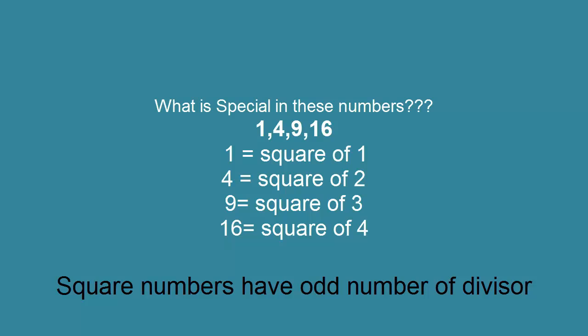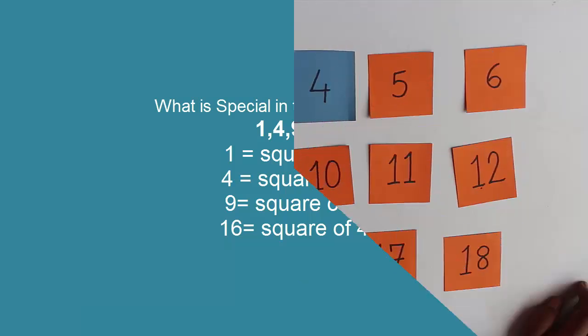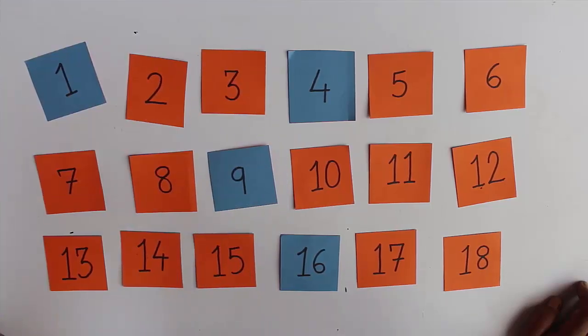So the cards with an odd number of divisors got turned an odd number of times. That's why they changed color from orange to blue. Just an amazing theorem which we can demonstrate with this magic trick: only square numbers have an odd number of divisors. Thank you.